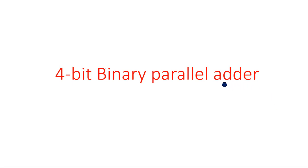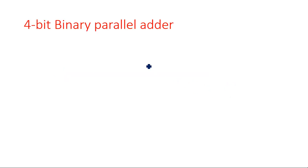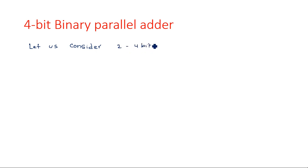Hi everyone, in this video I am going to explain about the 4-bit binary parallel adder. Let us consider two 4-bit numbers. A is one 4-bit number and B is another 4-bit number. That means I am taking two 4-bit numbers.